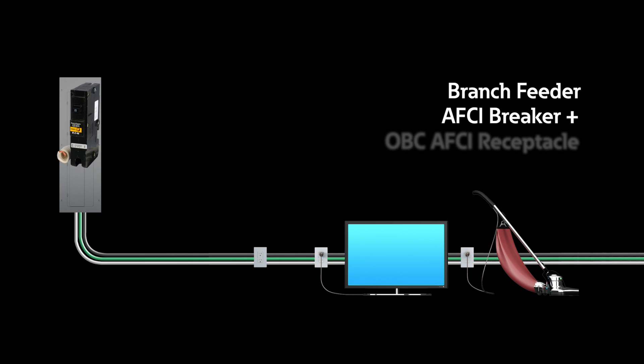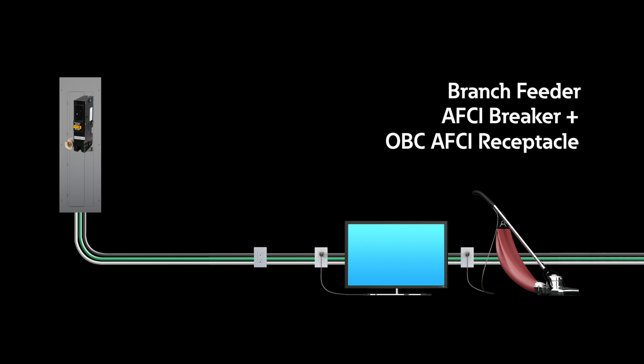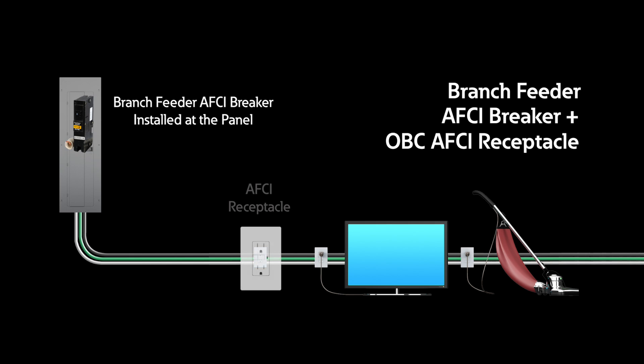Branch feeder AFCI breaker with outlet branch circuit AFCI receptacle. This is a branch feeder type AFCI breaker installed in the panel with an AFCI receptacle installed at the first outlet box on the branch circuit. This method protects the entire circuit from the source and allows local reset capabilities. However, it requires two AFCI devices that can be costly.